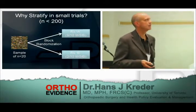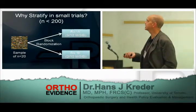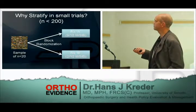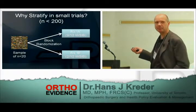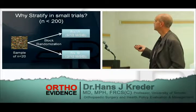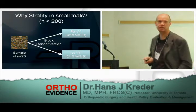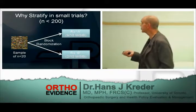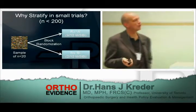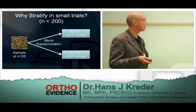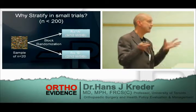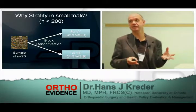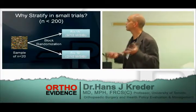What is stratification? Let's say we're doing a randomized trial with a sample of 20. We do our block randomization and the groups are equal. But just by chance, we've got 9 out of 10 in group A that are workers' comp patients — say, calcaneus fractures — and in the other group, we only have 2 out of 10. In a small trial of 20 patients, that can happen. You've equalized the groups, but they're not equal with respect to some important variables like workers' comp. So what do we do about that?